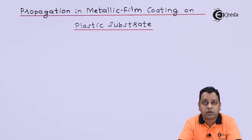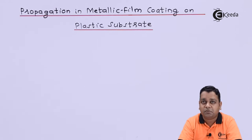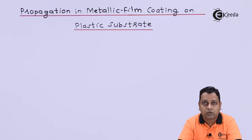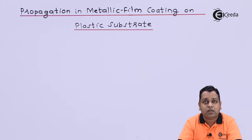For such applications, a metallic film is coated onto the plastic substrate and used for optimum attenuation. At this point, the effective conductivity of the metallic film as compared to that of the bulk metal must be accounted for. We also need to find the surface resistance for this metallic film and how much attenuation is achieved by using metallic films coated onto the plastic or glass core. Let us formulate the conductivity of this metallic film.